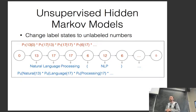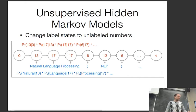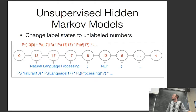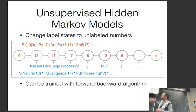For unsupervised HMMs, instead of named classes, you specify a number of states — say 20 or 30 — and the model automatically allocates each word to a state to maximize the probability. Parameters can be categorical distributions, trained using the forward-backward algorithm — the same algorithm used for CRFs, which was actually first developed for HMMs.